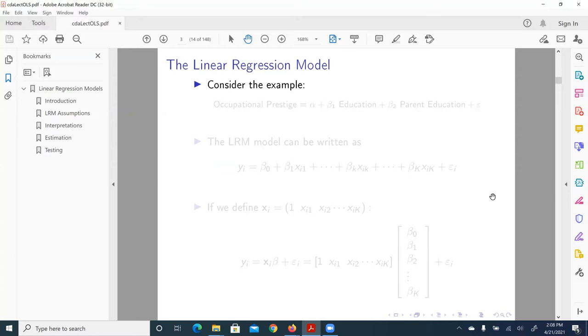Here, I'm going to formulate this multivariate linear regression model. So consider this example. We have a dependent variable occupational prestige. It is a function of alpha.